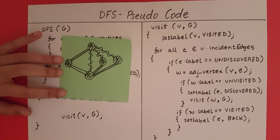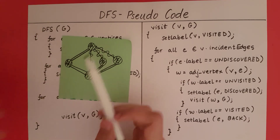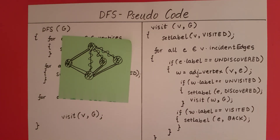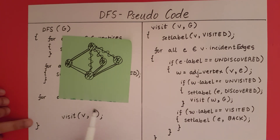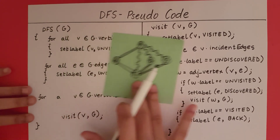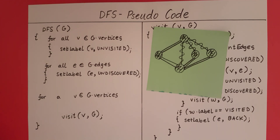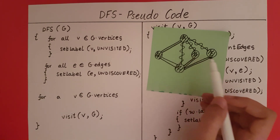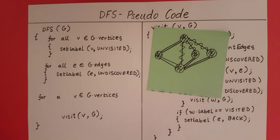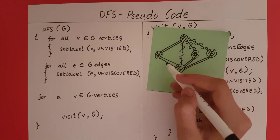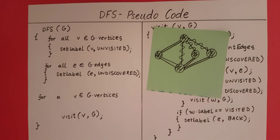We are back at visit(A). Are there any more undiscovered edges incident on A? No. So we come out of the function and complete visit(A). We have completed the initial function call and return from the DFS algorithm. We have achieved all vertices visited and all edges labeled — none are undiscovered. Our DFS algorithm is working.